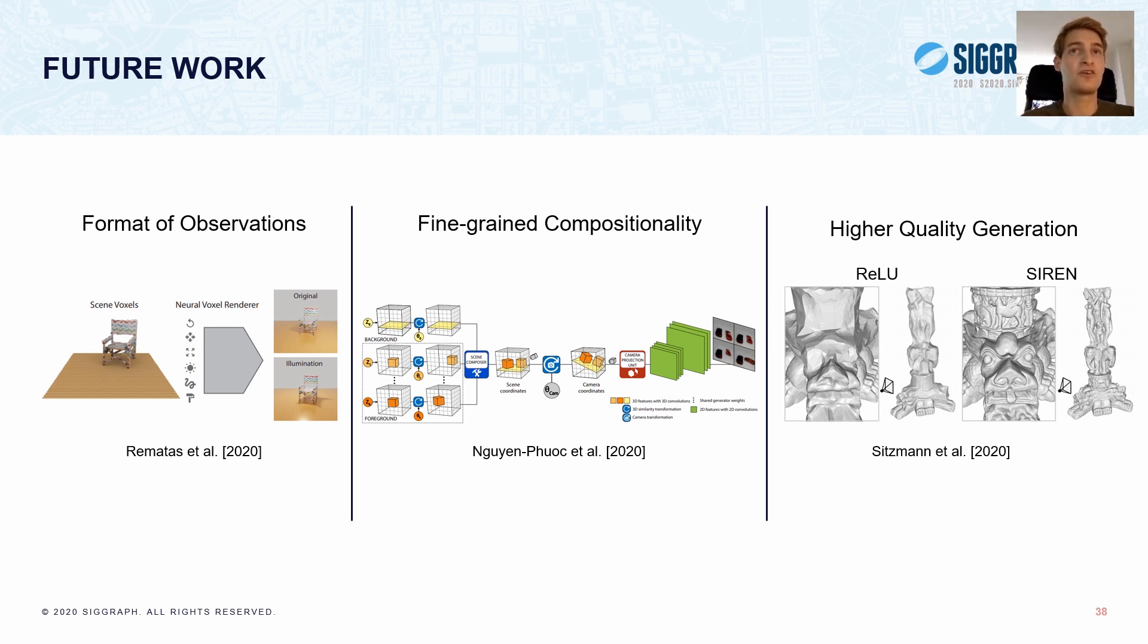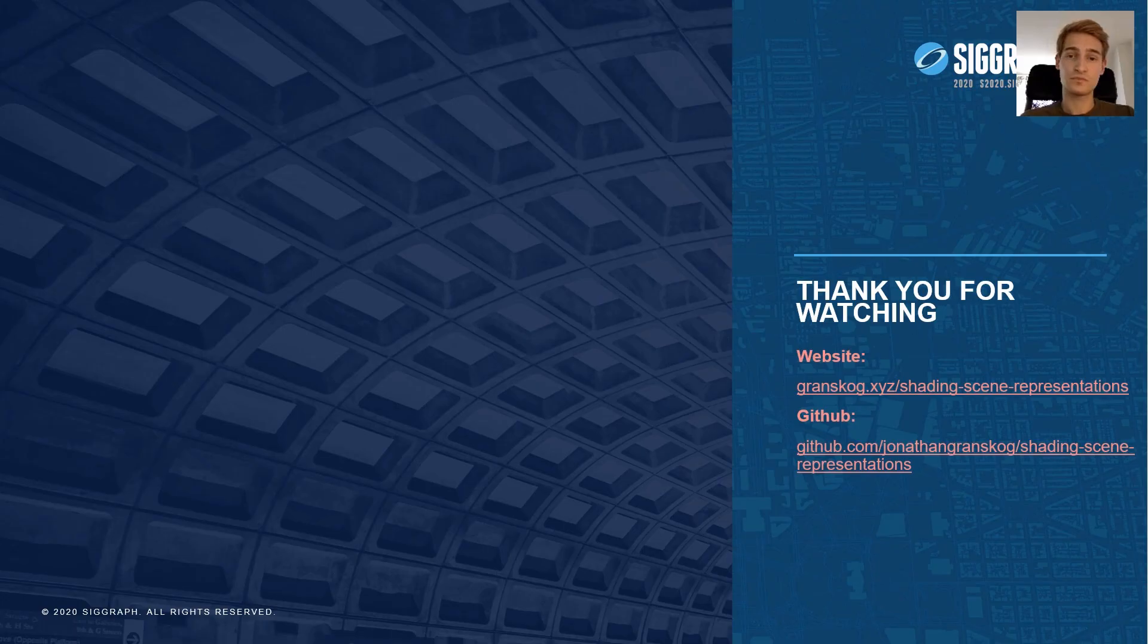We hope that this work inspires you to investigate this area further. We believe that there is truly an enormous potential in using neural scene representations and neural renderers in a complementary manner to traditional approaches. For example, this could be used with denoisers, or for importance sampling, or any other networks used with computer graphics methods. So, that concludes the presentation. Thank you so much for watching!